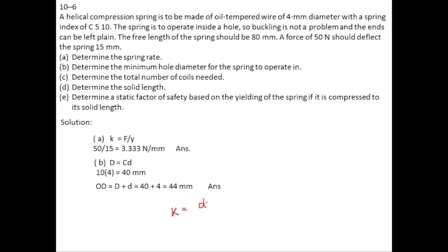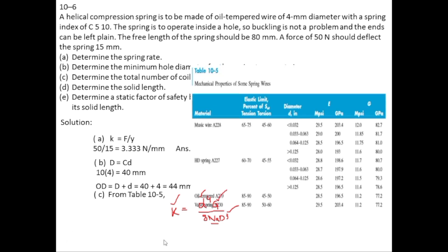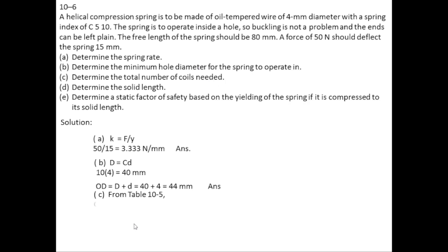Using the spring rate formula k = d⁴G / (8 N_A D³), we know k, wire diameter d, and mean coil diameter D. We need the value of G, which can be found from table 10.5. For oil tempered wire in SI units, G turns out to be 77.2 GPa. Rearranging the formula to solve for active coils N_A and substituting all values gives N_A equal to 11.6 coils.